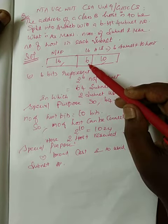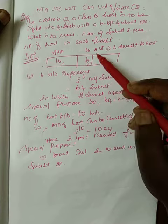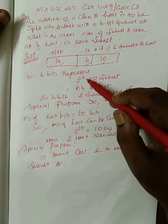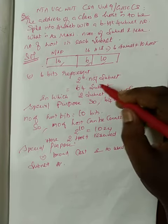So 6 bits is reserved for subnet. So how many number of subnets total we can take is 2 power 6, which is nothing but 64 subnets.